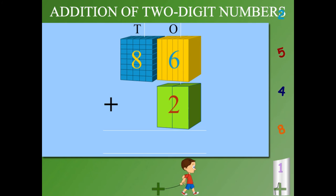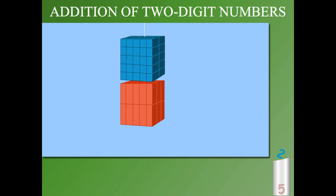Add only the ones: 6 plus 2 is 8. And copy the tens: it's 88. And now it's 50 plus 10.